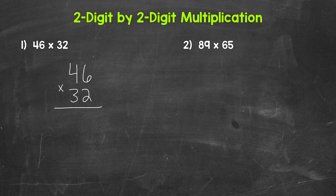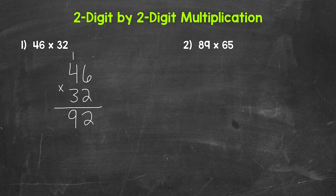Looking at that two in 32, we need to start with two times six. That gives us 12, so we write our two and carry the one. Now we have two times four, which gives us eight, plus that one is nine. So 46 times two is 92.